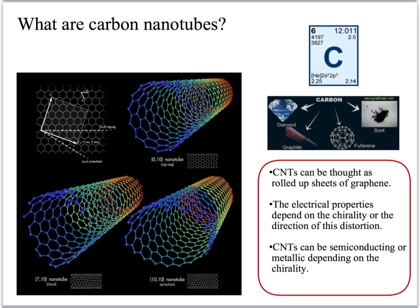So what are carbon nanotubes? Carbon nanotubes are obviously made of carbon, which is a group 4 element. It has 6 electrons and 6 protons.